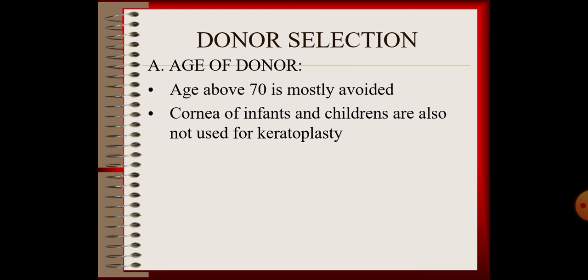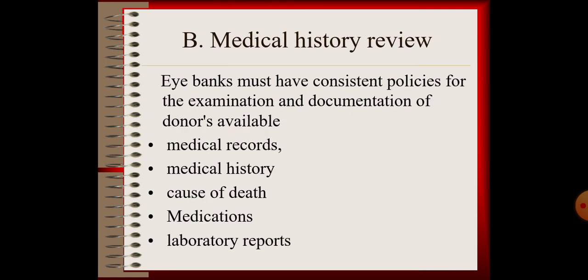Donor selection: Regarding age of donor, age above 70 is mostly avoided. Corneas of infants and children are also not used for keratoplasty. Medical history of the donor also has to be reviewed. Eye banks must have consistent policies for the examination and documentation of donors. The person's medical records, medical history, cause of death, medications, and lab reports all have to be checked.